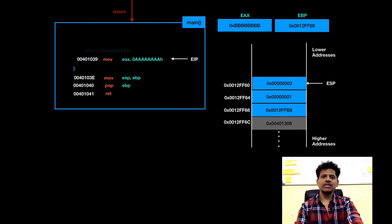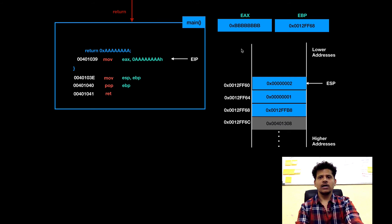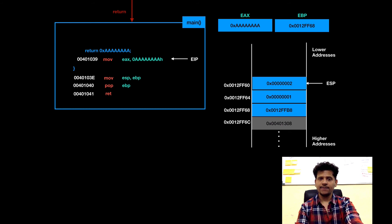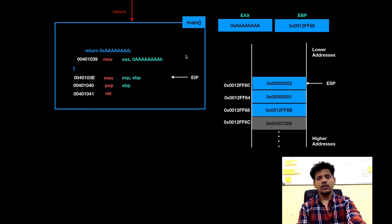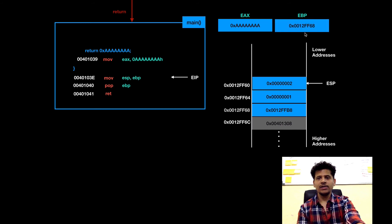Now in the C statement, main is returning. For that we will move the return value into eax. Currently eax contains the previous value. Let's execute that and now eax contains the new value. Next C statement is main is ending here. For that we will clear the space allocated for main to save its local variables. We have to move ebp into esp and that's how we can get rid of those two elements. ebp is 0012ff68 and now esp will point there.